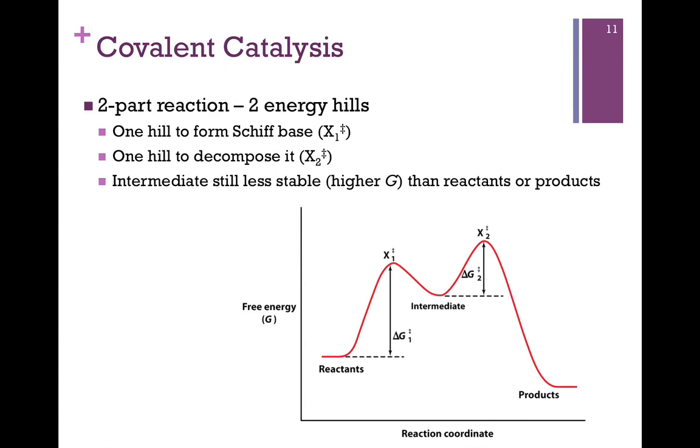In covalent catalysis, remember, it's a two-part reaction. And so if we look at the reaction diagram, we actually have two energy hills. The first energy hill, and this would be our delta G double dagger one, that represents the energy hill we need to get over in order to form that covalent bond. So our first intermediate is X1 double dagger. After we form that covalent bond with our substrate and convert it to product, we have to break that bond, and that's our second energy hill here. Here's our second intermediate X2 double dagger. We have to reach the top of that energy hill and get over to release the final product. This is the hallmark of covalent catalysis, this double-hilled reaction diagram.